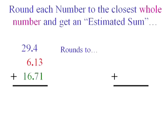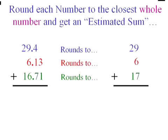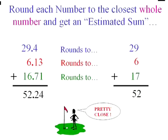29.4 to the nearest whole rounds to 29. Easier to deal with. 6.13 to the nearest whole rounds to 6. And 16.71 to the nearest whole. Of course the 7 says to go up. So it's going to round to 17. Now we've made our problem easier. And our estimated sum is 52. Actually the answer is 52.24. So we did pretty good.